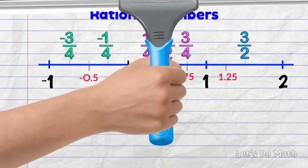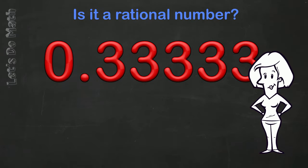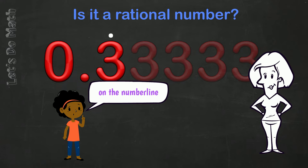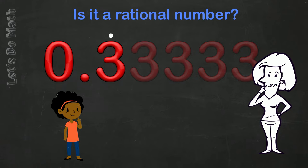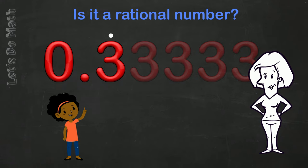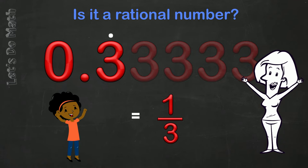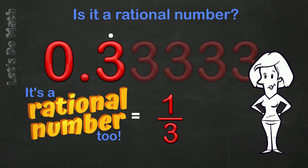OK, what about this then? 0.3 recurring. You might say, well, the 3 goes on forever. It can't occupy a precise place on the number line. But then you might say, hang on! I know that 0.3 recurring is the same as 1 third! Aha! That means it's a rational number too!